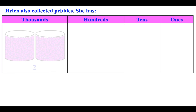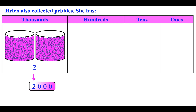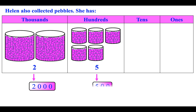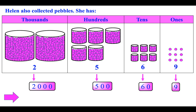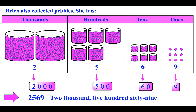Helen also collected pebbles. She has two thousands, five hundreds, six tens, and nine ones. The total number of pebbles is two thousand, five hundred, sixty-nine.